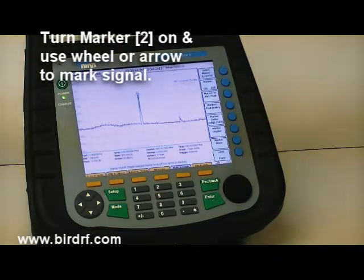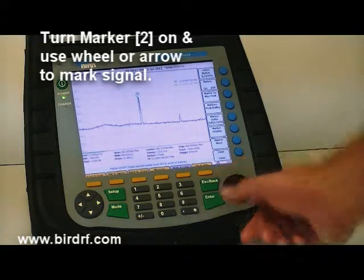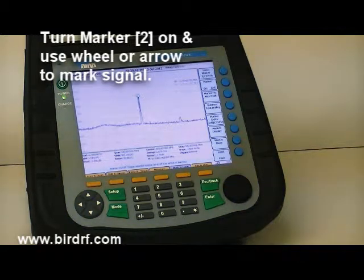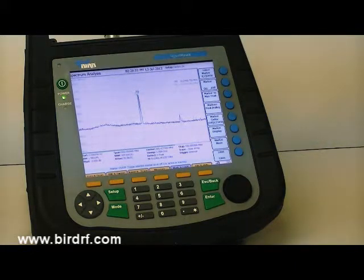Now if I turn Marker 2 on and use my wheel, I can mark my second signal. Now because I have a very wide sweep or a very wide span, everything is closer together.